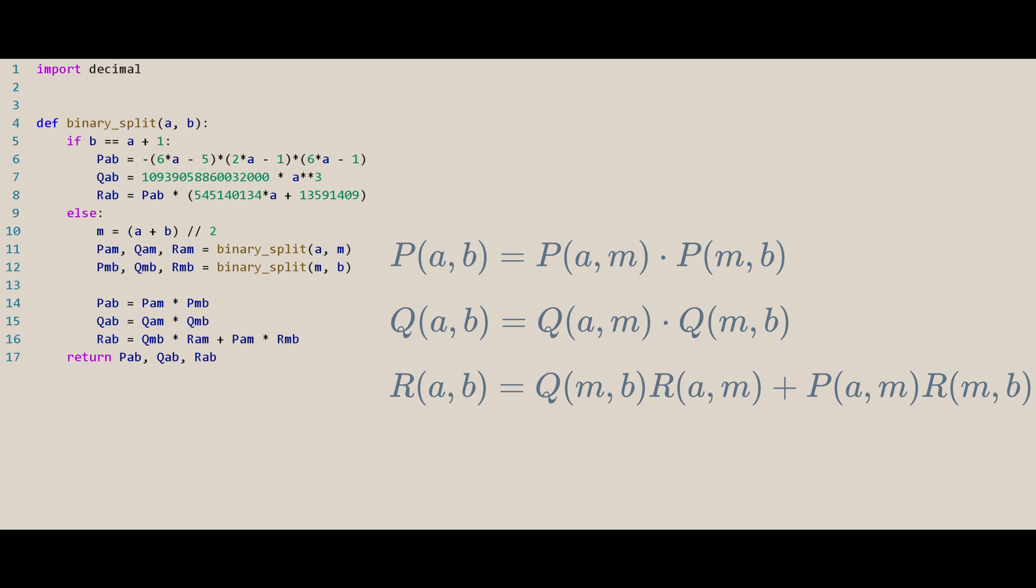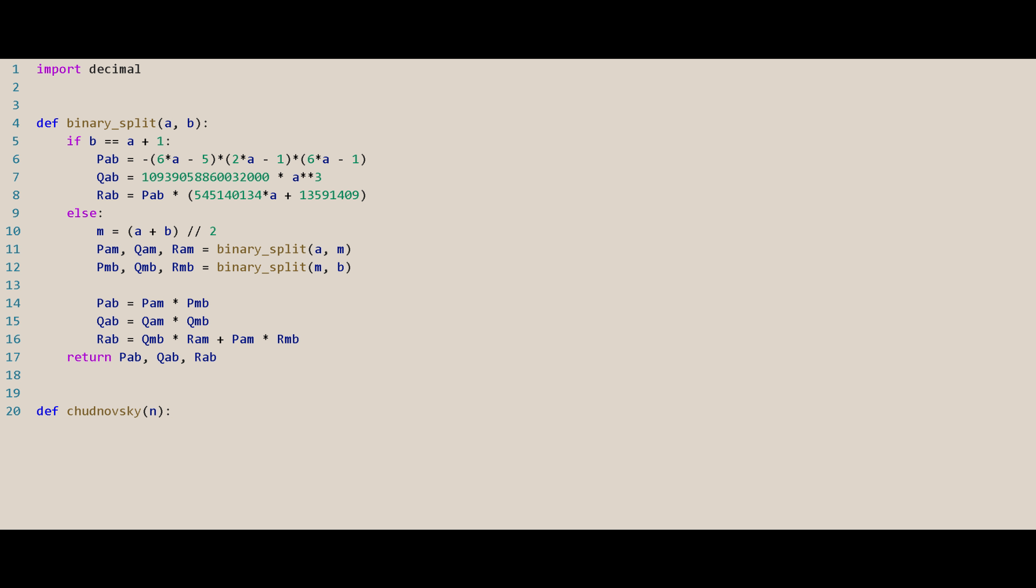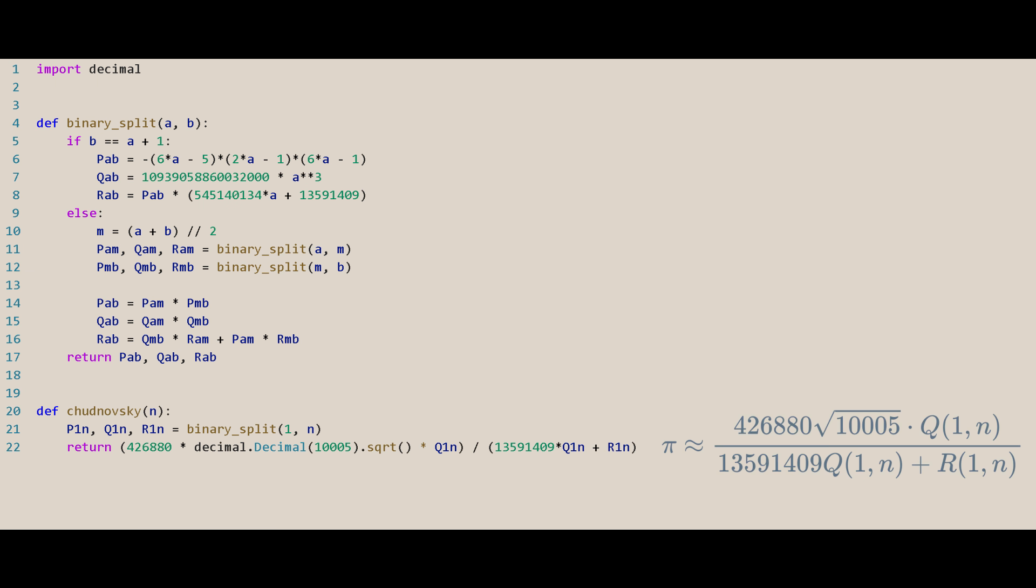Now, let's define a function called Chudnovsky, which takes in a value for n. This function is going to return better approximations for pi as n gets bigger. First, let's compute P, Q and R of 1 and n using the binary split function. And now, simply return an approximation for pi with this.